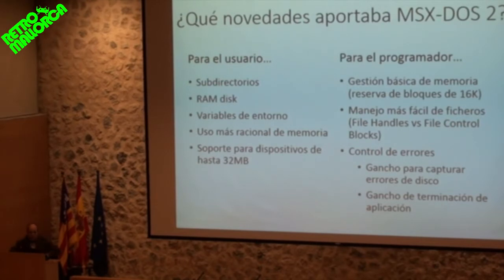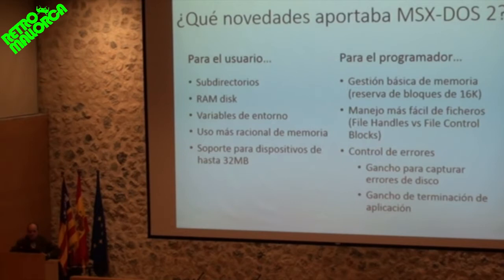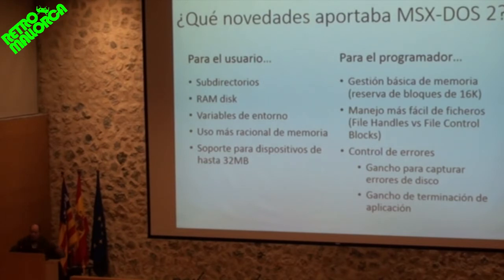For the programmer, it provided basic memory management — you could reserve 16KB blocks for exclusive use by an application, making it possible to create resident programs, something resembling multitasking. File management was easier: opening a file returned a file handle — one byte — whereas in the old version you needed a 30-byte dedicated block. And more rational error control: in version 1, when there was a disk error the famous 'Abort, Retry, Ignore' appeared and you couldn't escape, while in version 2 programs could capture that error and handle it more rationally.